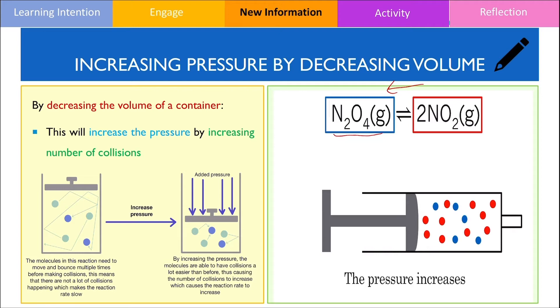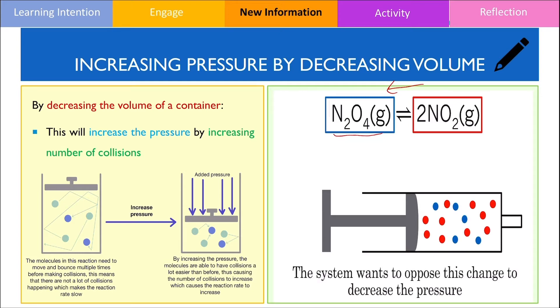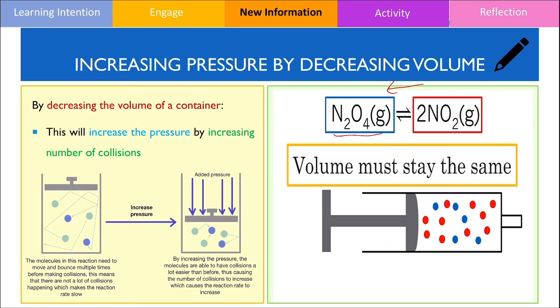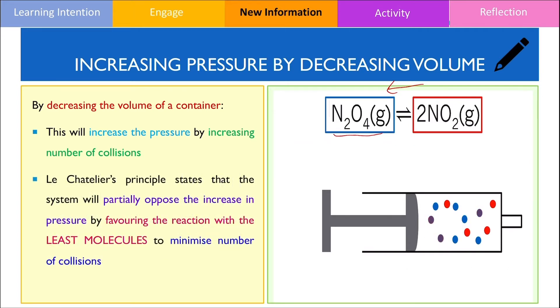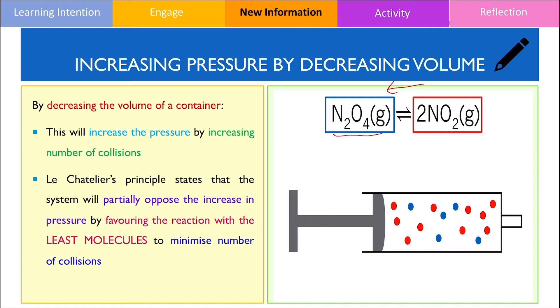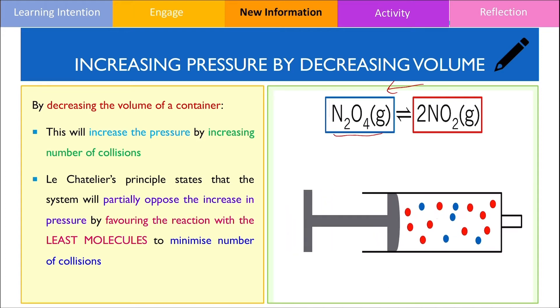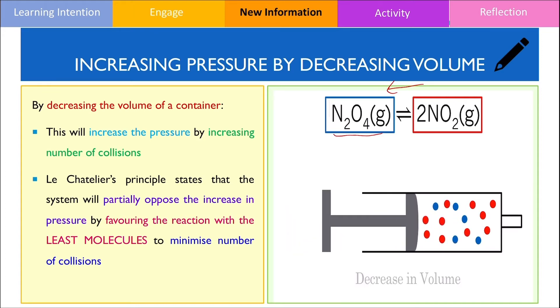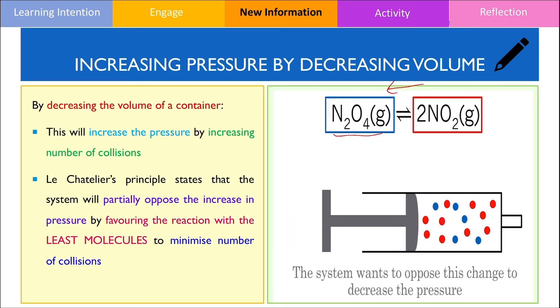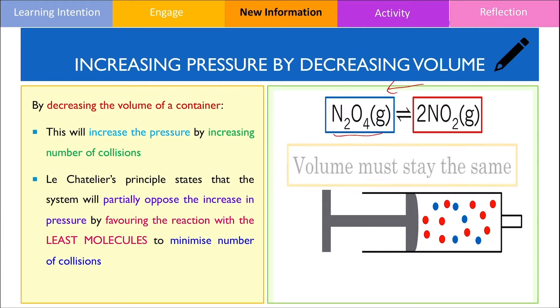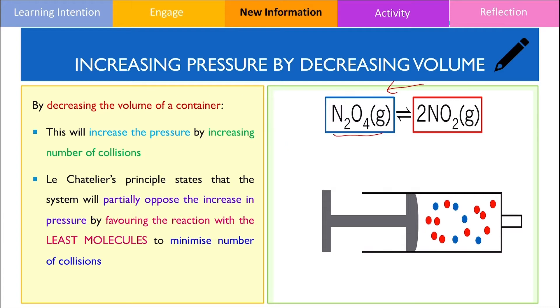Why is this the case? In this particular example, the system partially opposes the increase in pressure or the increase in collisions by favouring the reaction that produces the lowest number of molecules to minimise the number of collisions or pressure.